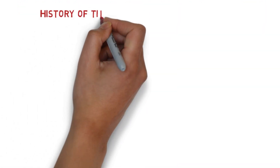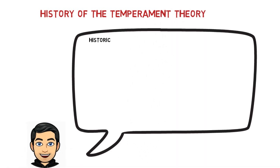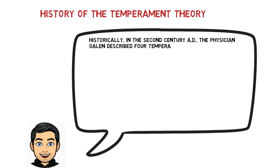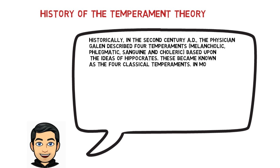What is the history of the temperament theory? Historically, in the 2nd century AD, the physician Galen described four temperaments — melancholic, phlegmatic, sanguine, and choleric — based upon the ideas of Hippocrates. These became known as the four classical temperaments.